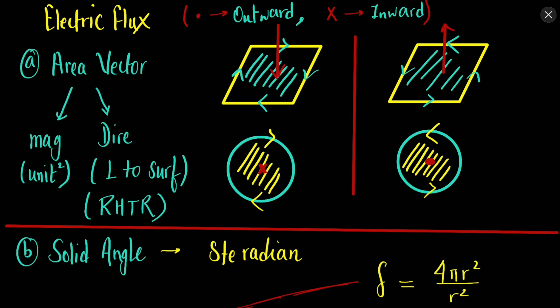After discussing the electrostatic force, electric field and potential, we can now move on to electric flux. This is one important concept which will help us in finding the electric field of various different shapes. Till now we have not discussed about the electric fields and potentials of a variety of different shapes, but using electric flux and Gauss law we can find the electric field of different shapes.